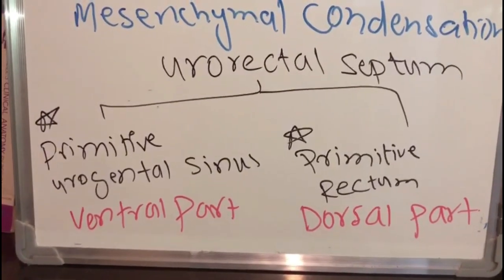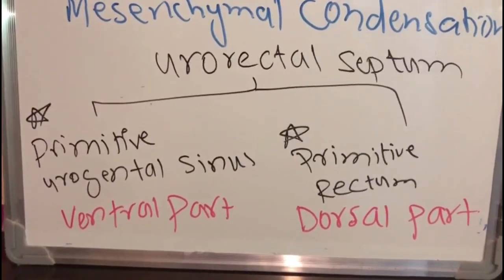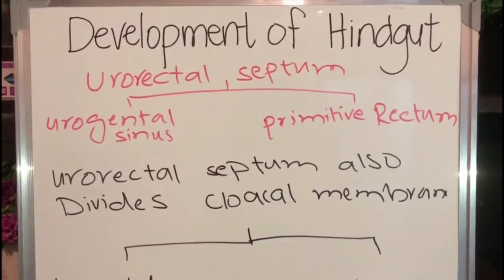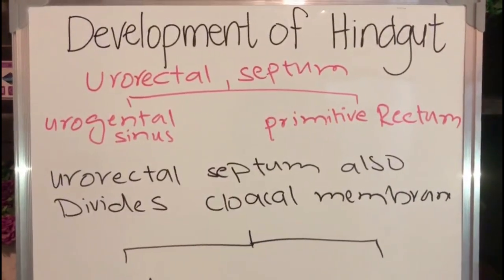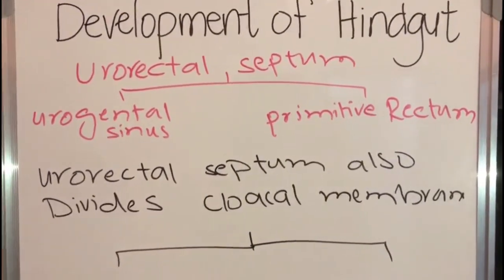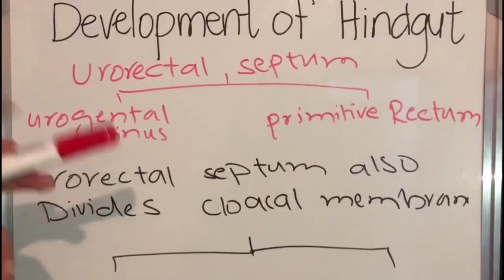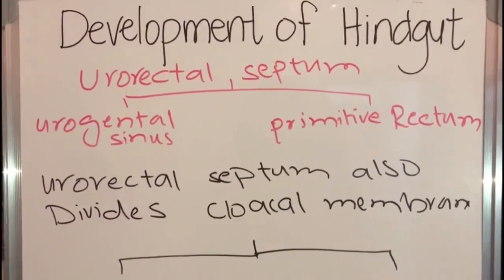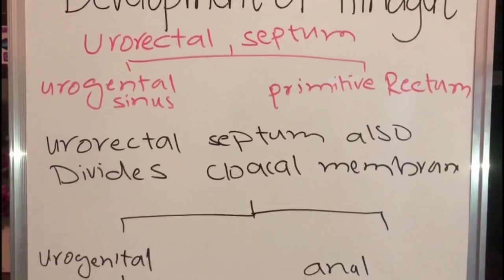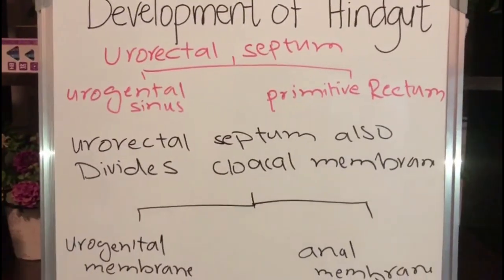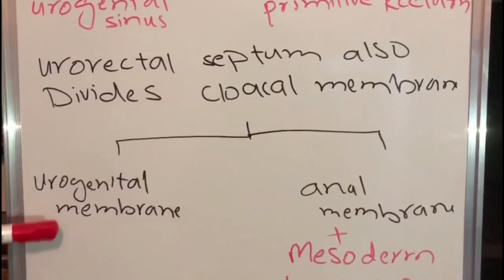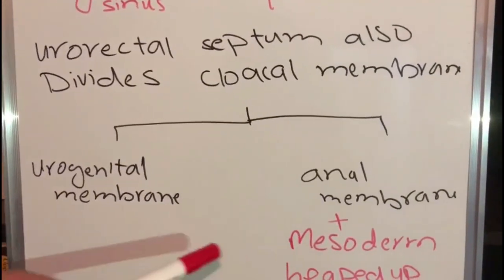The urorectal septum divides the cloaca into two parts: the primitive urogenital sinus on the ventral part, and the primitive rectum on the dorsal part. The second division of the urorectal septum also divides the cloacal membrane into two parts: the urogenital membrane and the anal membrane.